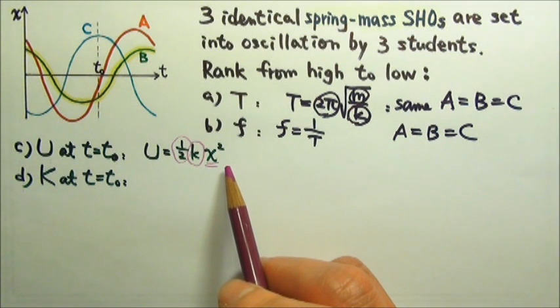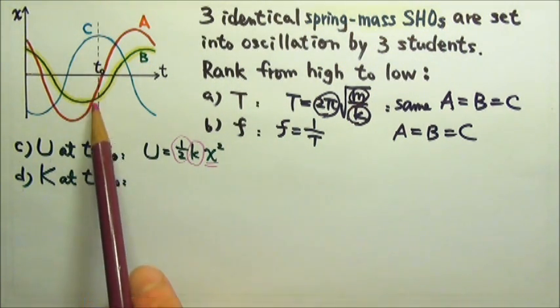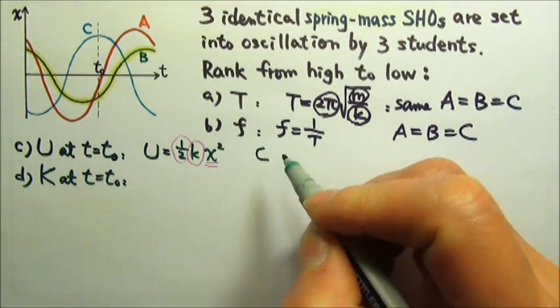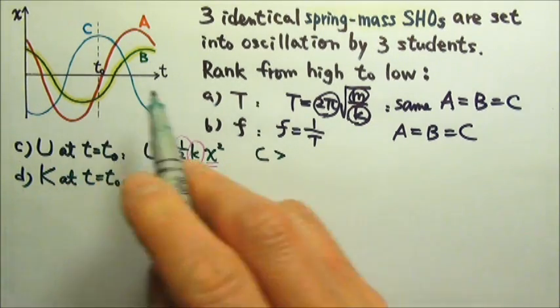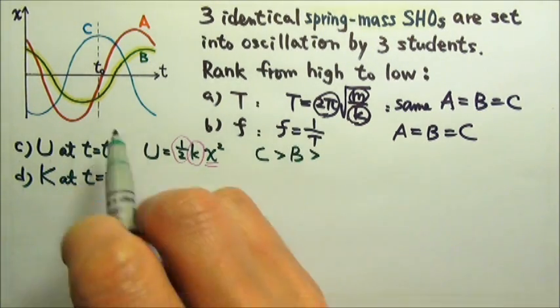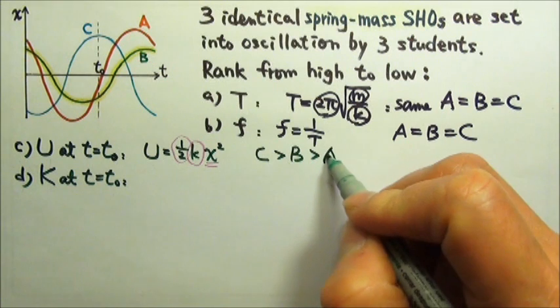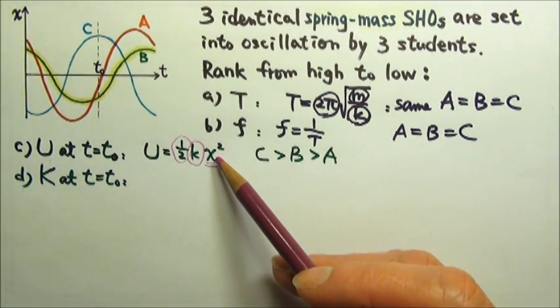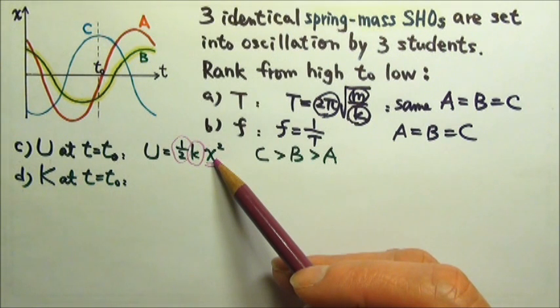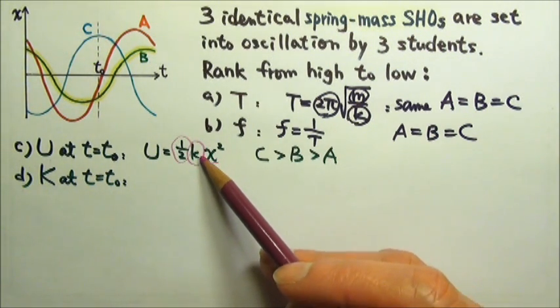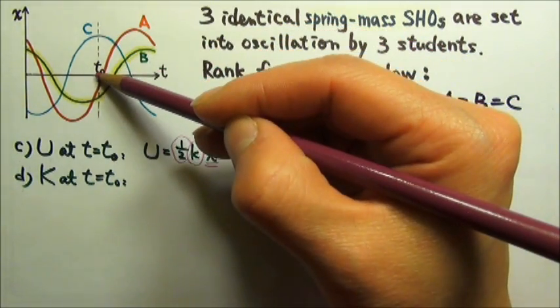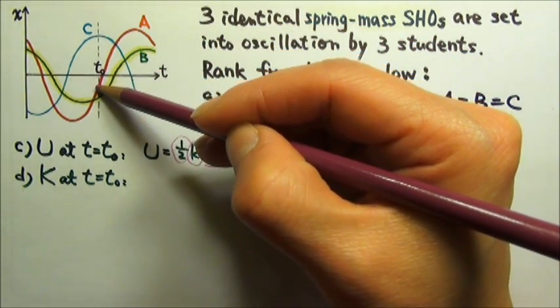So what do you get? Which oscillator has the largest x at T equals T₀? It is C, and then it's B, and then A. Because this is x², so the signs for x do not matter. We can just compare the amount of x. So C has the largest x, and then B, and then A.